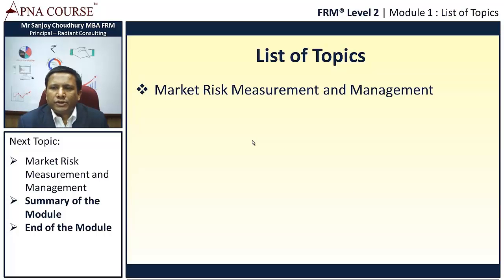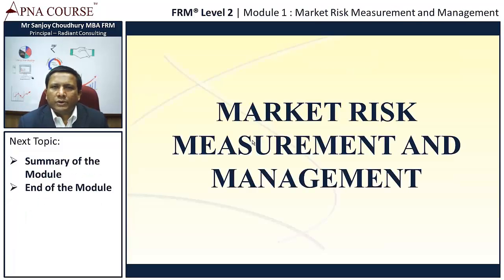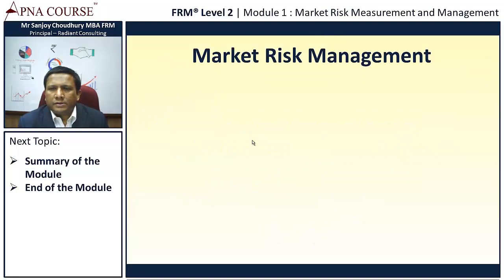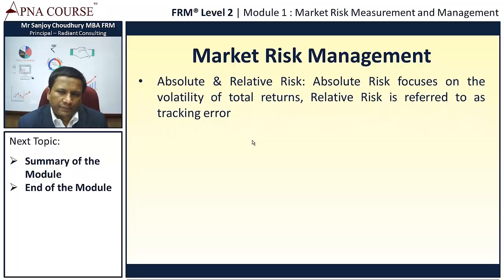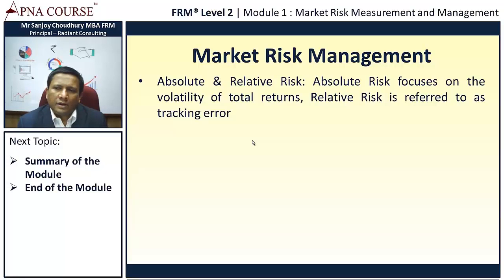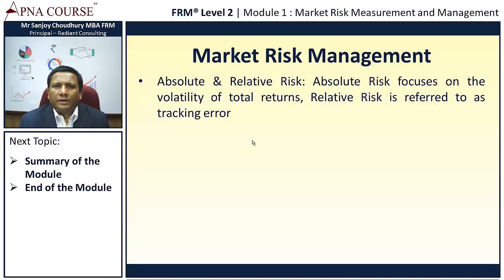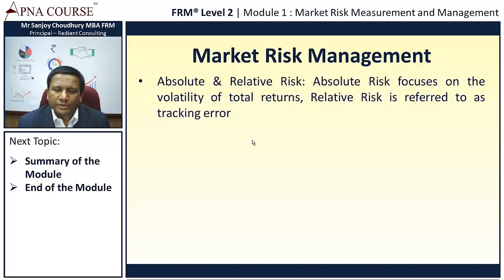To start off with market risk management and measurements, we'll focus on a few important areas — basically, what is market risk management. Market risk management is all about absolute and relative risk. Absolute risk focuses on volatility or total returns, and relative risk is referred to as tracking error. Market essentially means the financial markets, and due to fluctuations in prices in the financial markets, the risk or uncertainty is often referred to as market risk, which comprises part of the market risk management study.